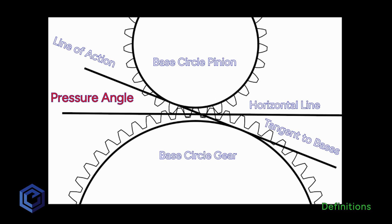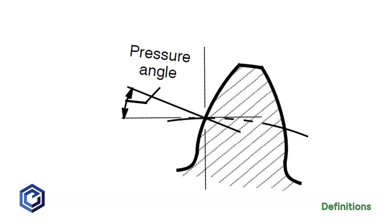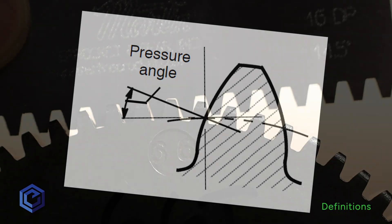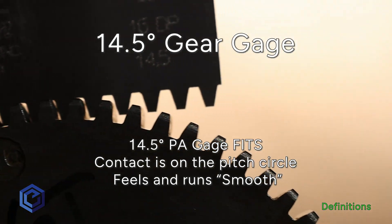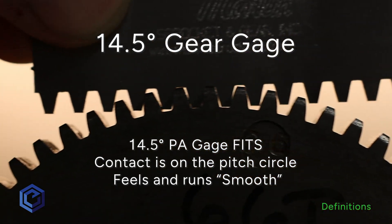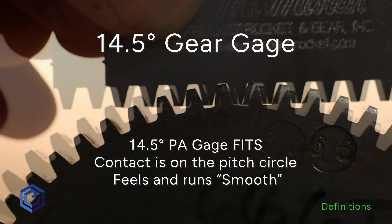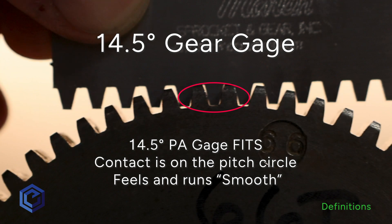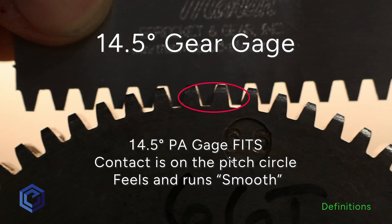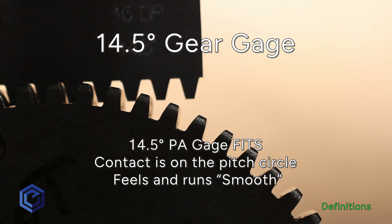And up close, here's what it looks like on the tooth that's right at those two pitch circles. Standards make for interchangeable gears and common cutting tools. The fit is on the pitch line. So when you're looking at your gauge, when they fit right down there where that pitch line circle is on the gear and your gear gauge runs really smoothly, that's how you know you've got a fit.